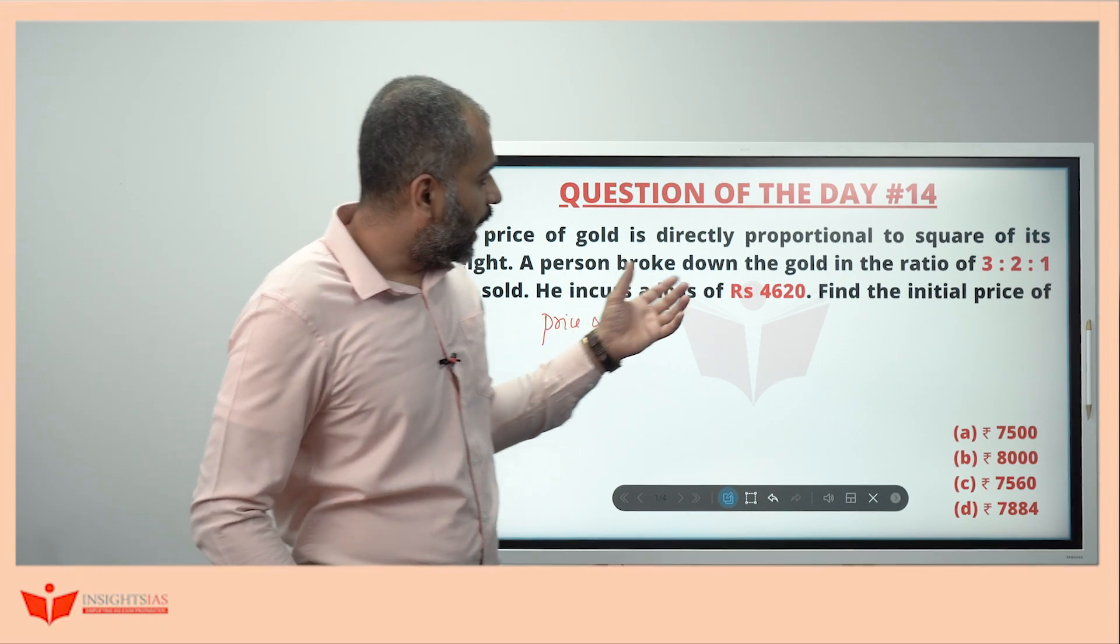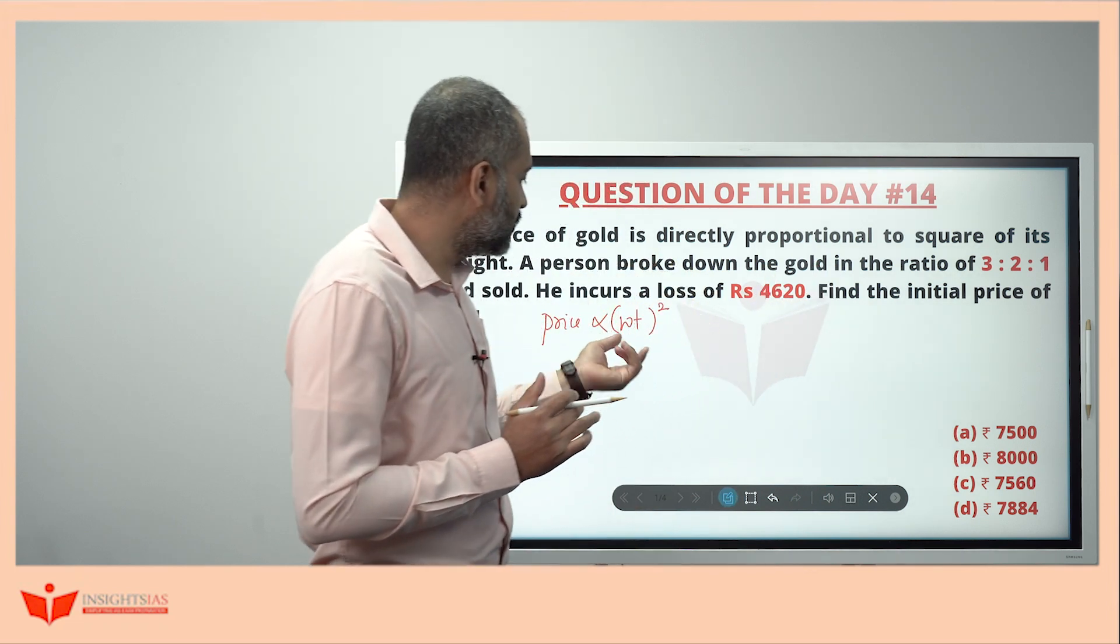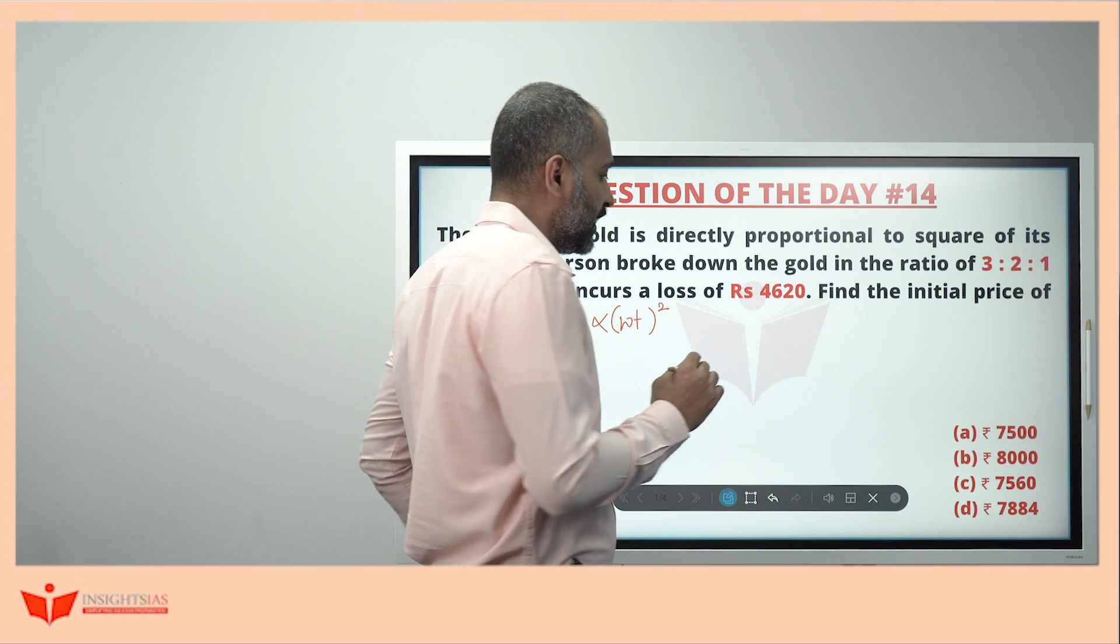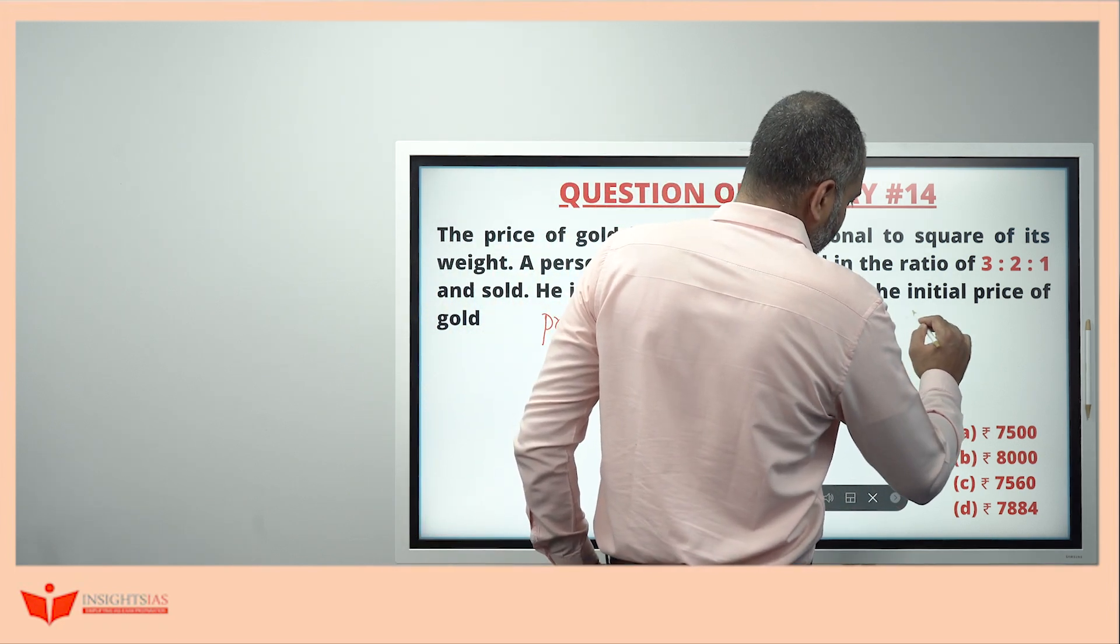See, unbroken gold, if it is intact, then its value is increased. For example, look here now. 9 square is equal to 81, right?